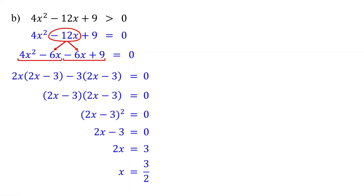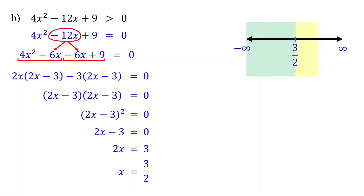By the way, if you want to revise solving quadratic equations using factoring, completing the square, and quadratic formula, please check out the links in the description. Next, draw a number line and plot 3 halves. Notice that our number line is divided into 2 intervals: less than 3 halves and greater than 3 halves. Now, choose one test point from each of these intervals. For the first interval, we can use 0. For the second interval, let's use 2.